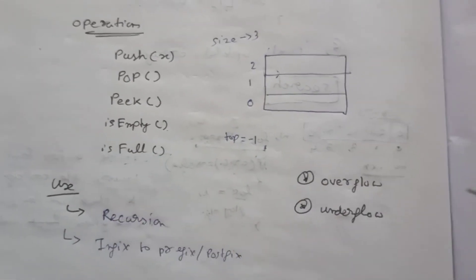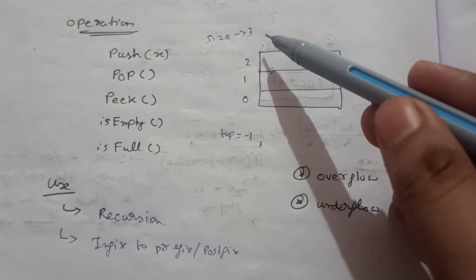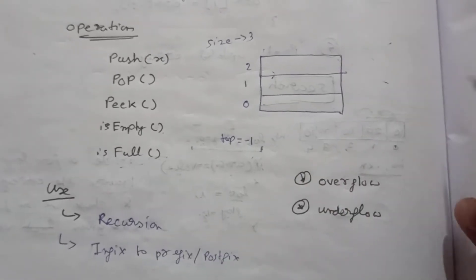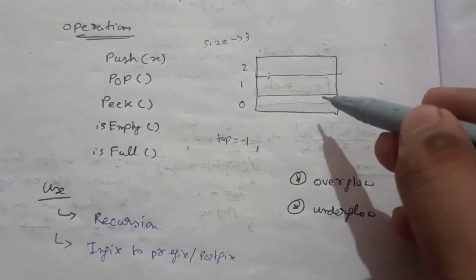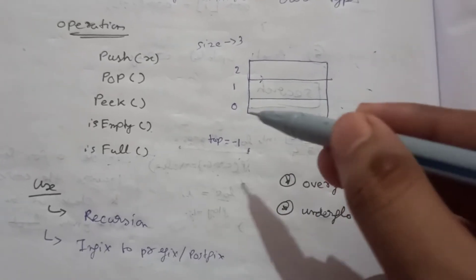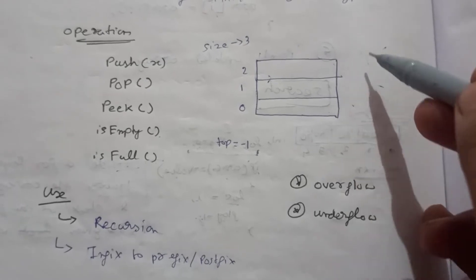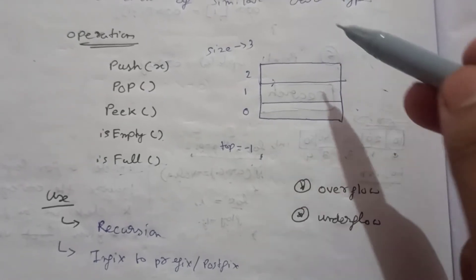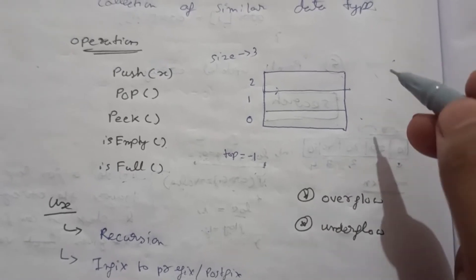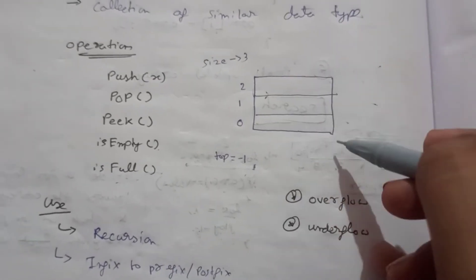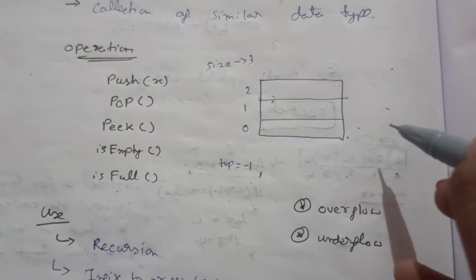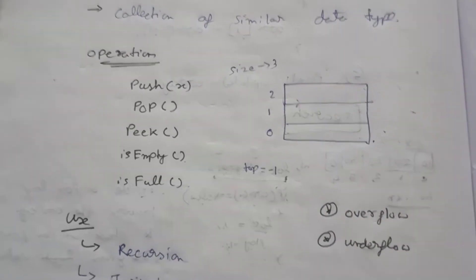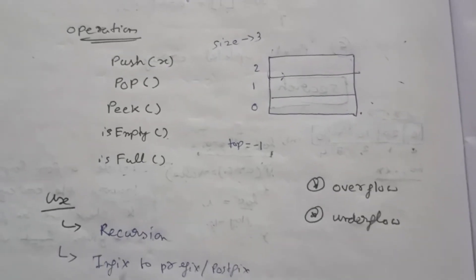The two conditions in the stack are overflow and underflow. If the stack size is three and we already have 10, 20, and 30 and we try to enter another value, the stack is already full — this condition is known as overflow. When the stack is already empty but we try to delete a value from it, this is known as underflow.